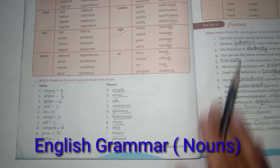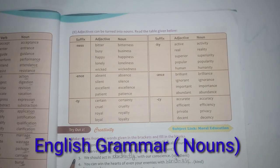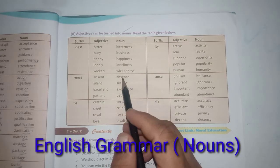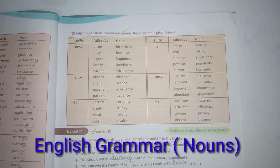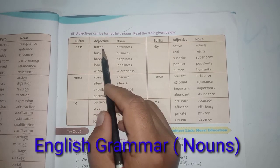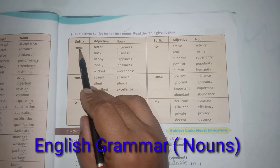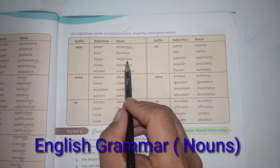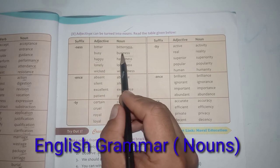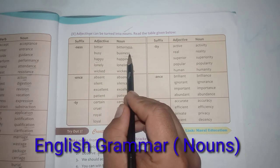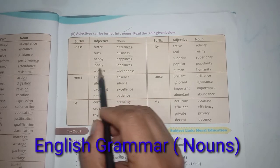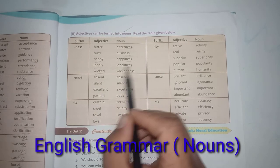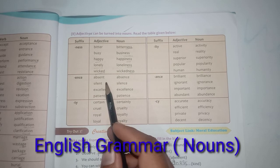Now let us take adjectives and how they are converted into noun forms. Adding -ness: bitter → bitterness, busy → business, happy → happiness (remove y, add i-ness), lonely → loneliness, wicked → wickedness.